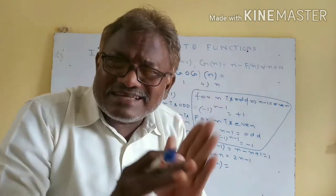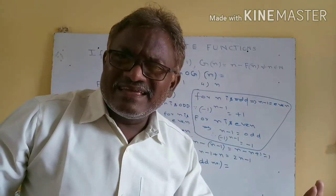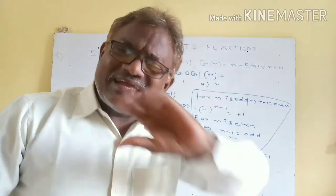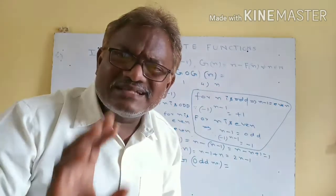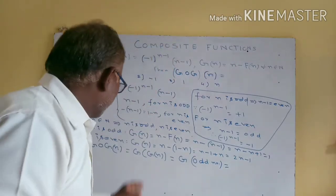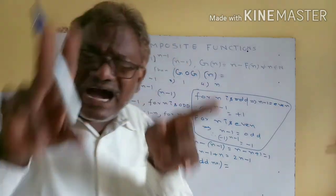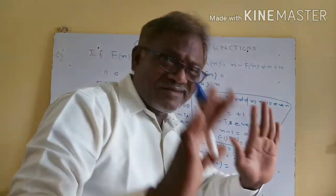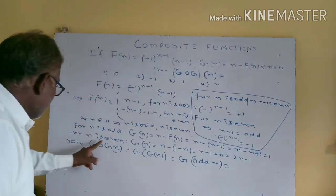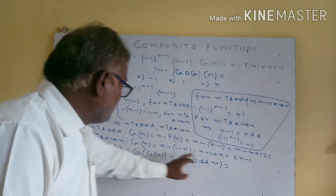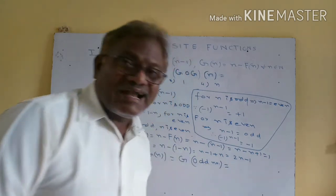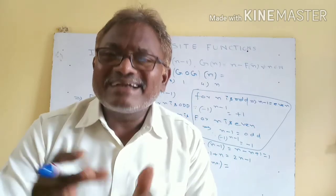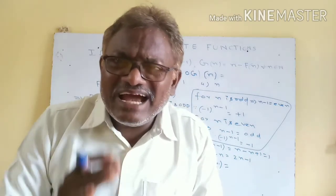So g(n) is equal to n minus 1. And from this n value... So g(n) value is 2n minus 1, an odd number form, odd number.